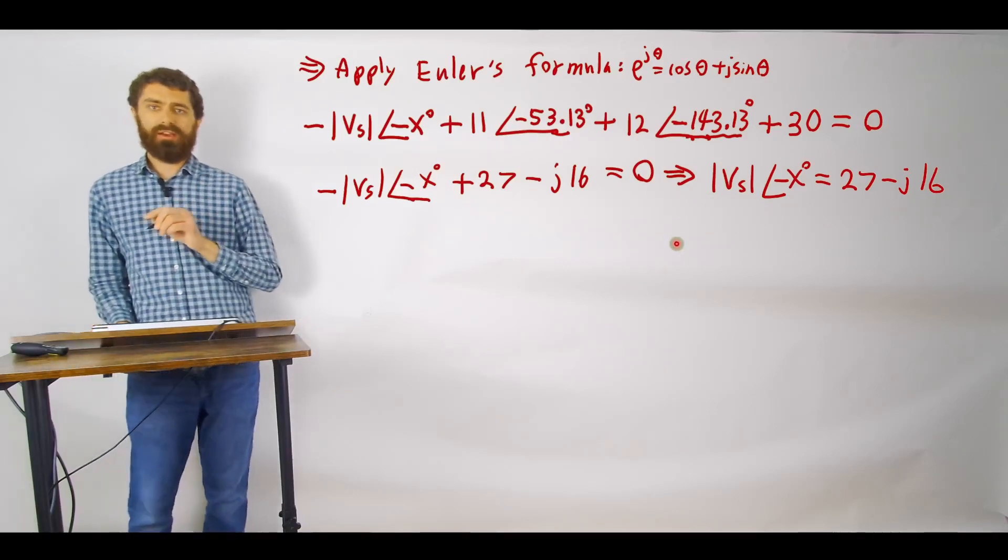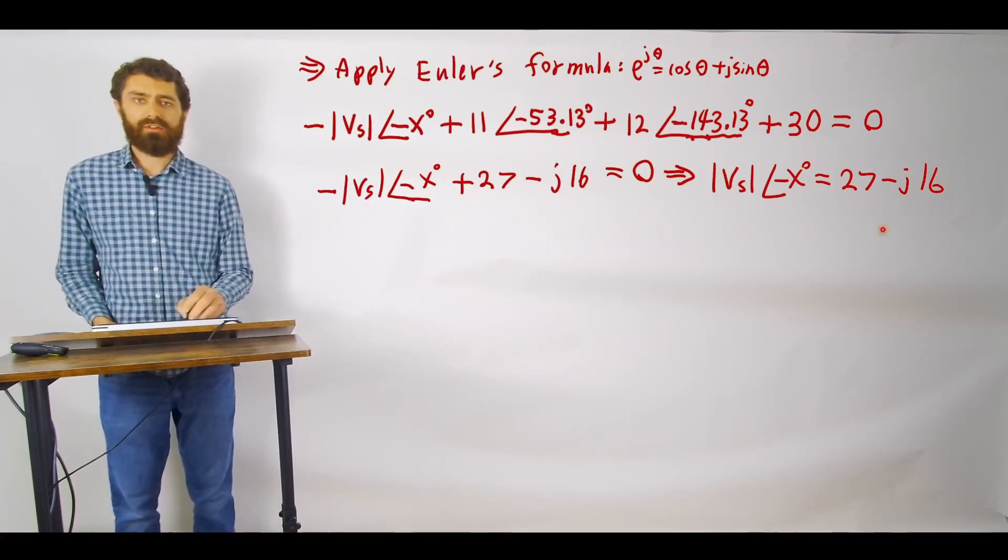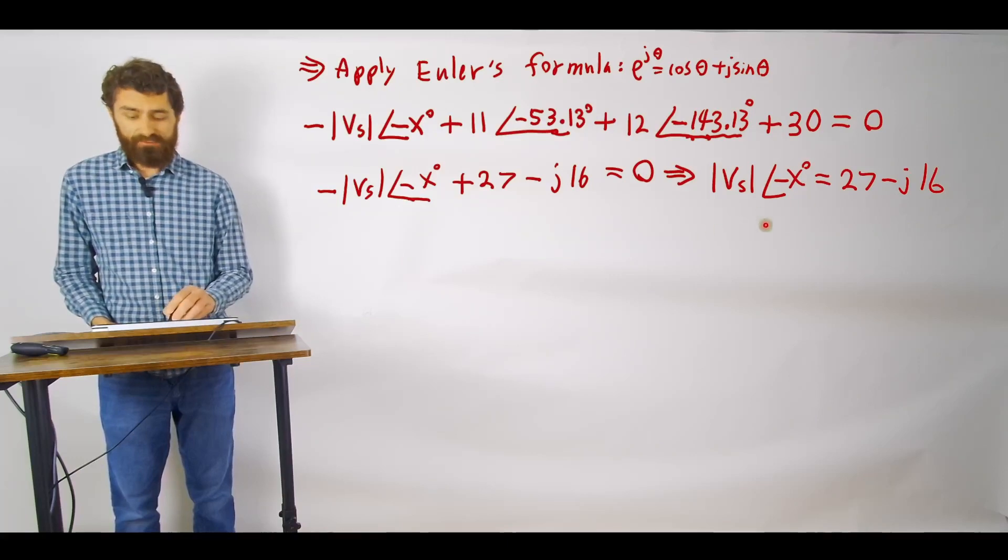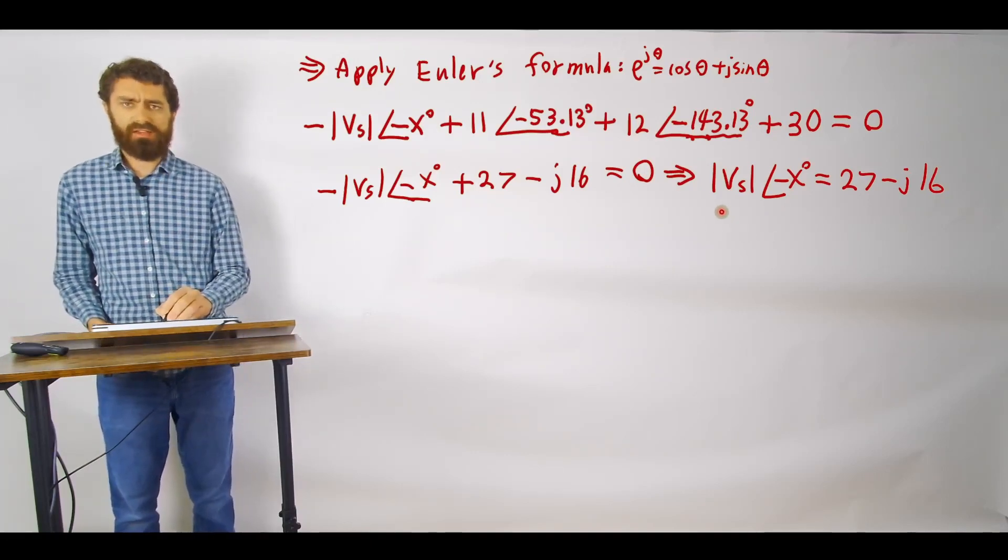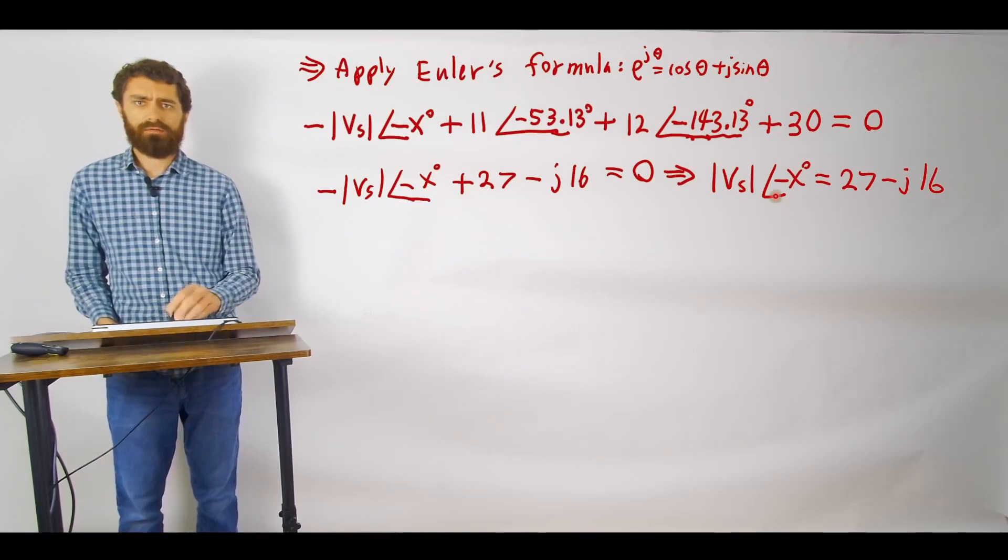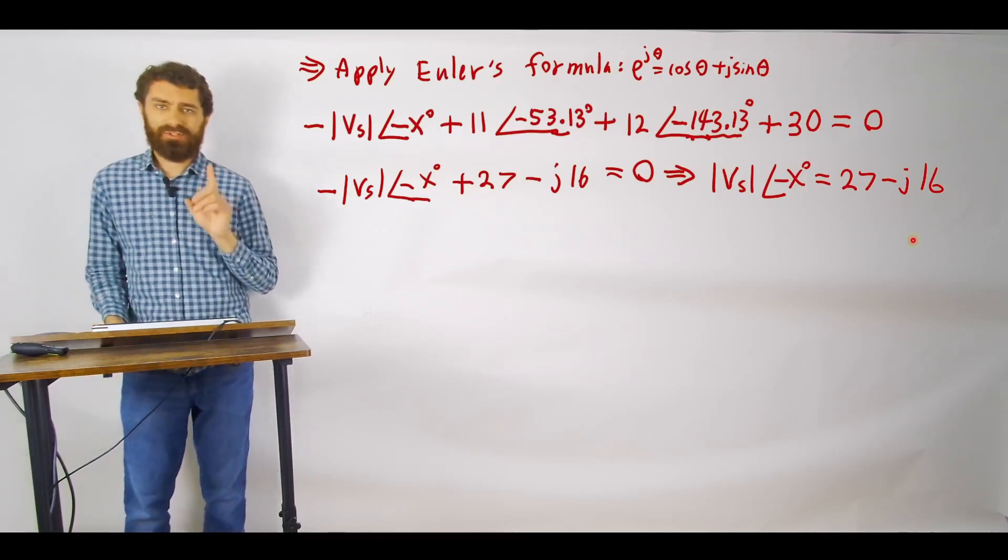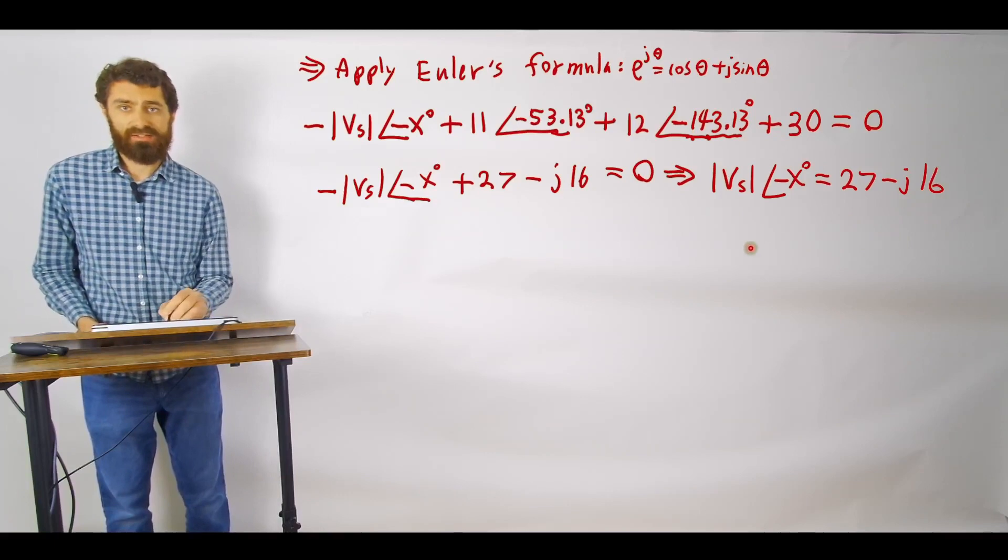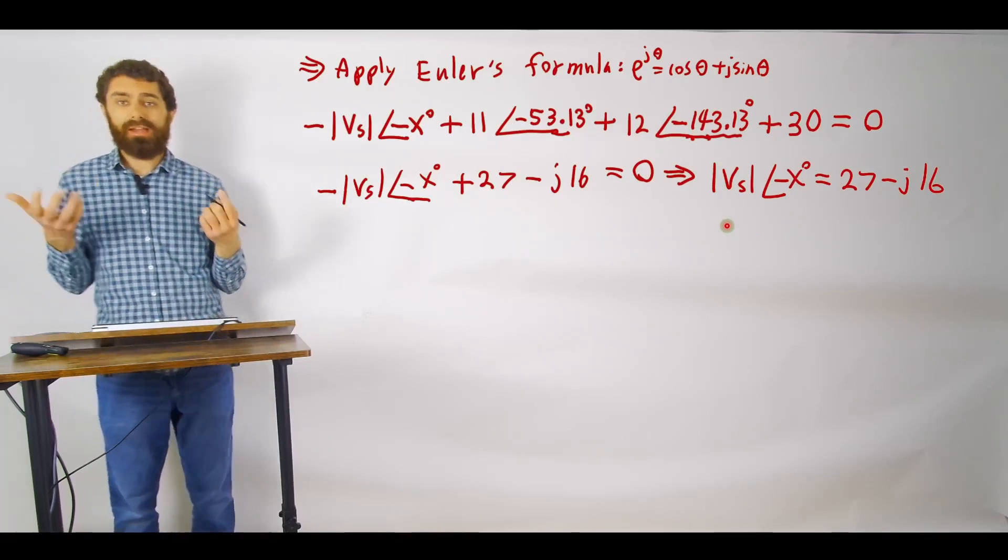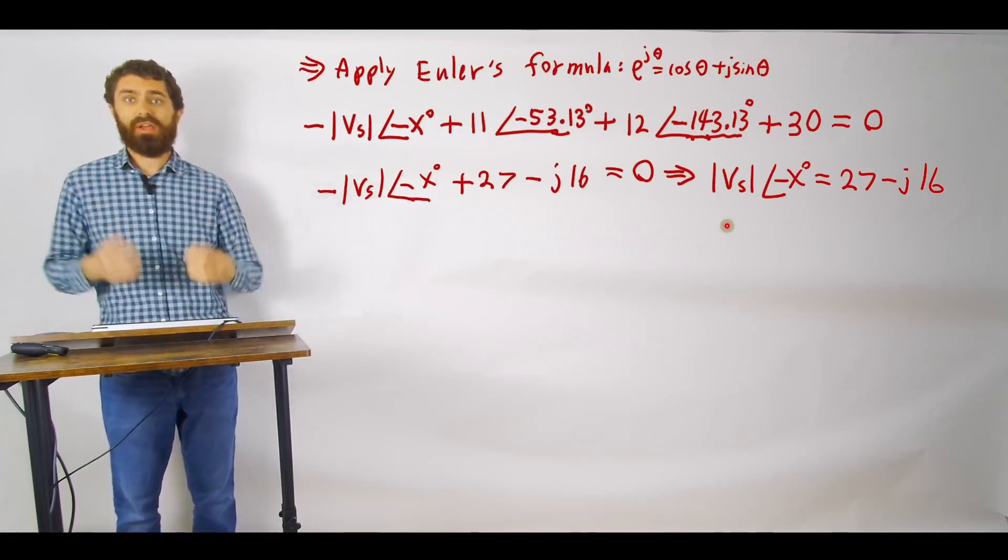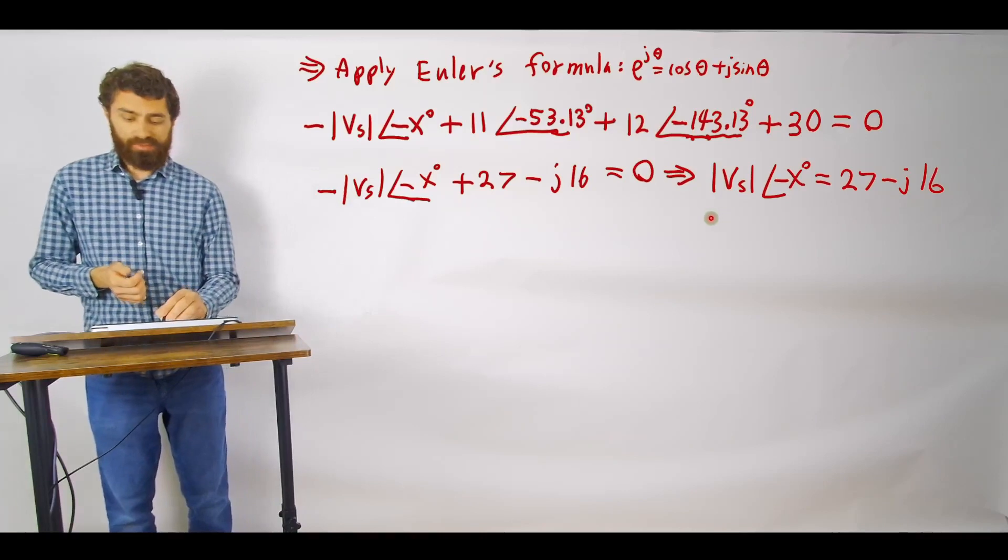Now one thing I want to point out that may be easy to miss is that it actually turns out with this equation we can solve for the magnitude of Vs and for the phase angle x. And you might think to yourself but wait a minute we have two unknowns, we've got Vs and then we have the angle here, two unknowns but we only have one equation so how can we solve for that? Well it turns out that we actually have two equations embedded into this because there's a real part and the real parts are equal to each other and then there's an imaginary part as well and the imaginary parts are equal to each other. So you actually have two equations embedded into one which allows you to actually solve simultaneously for the voltage and the phase.